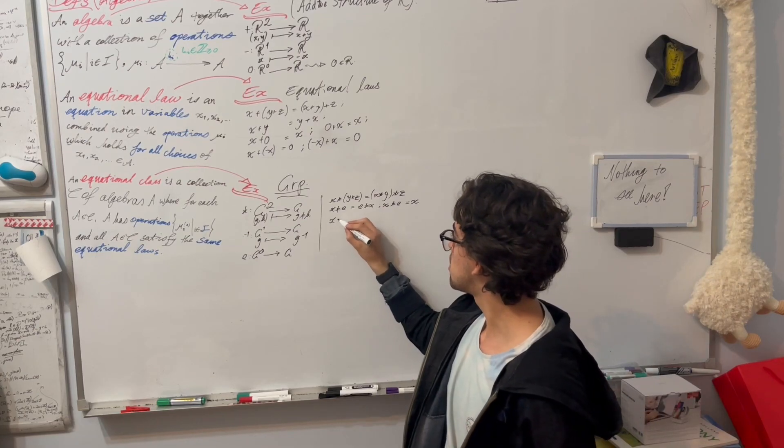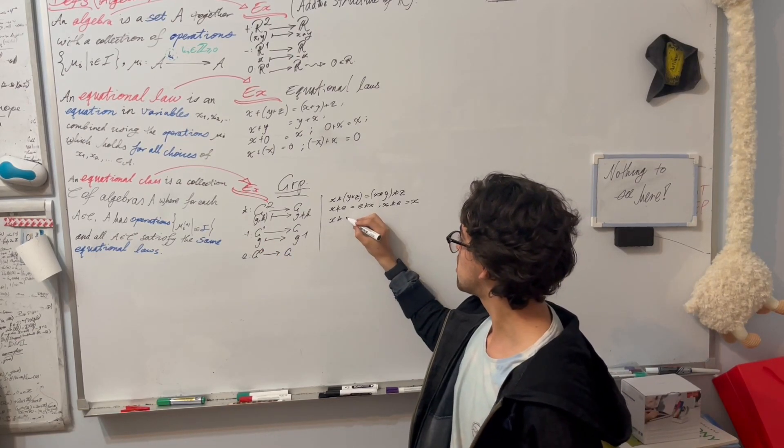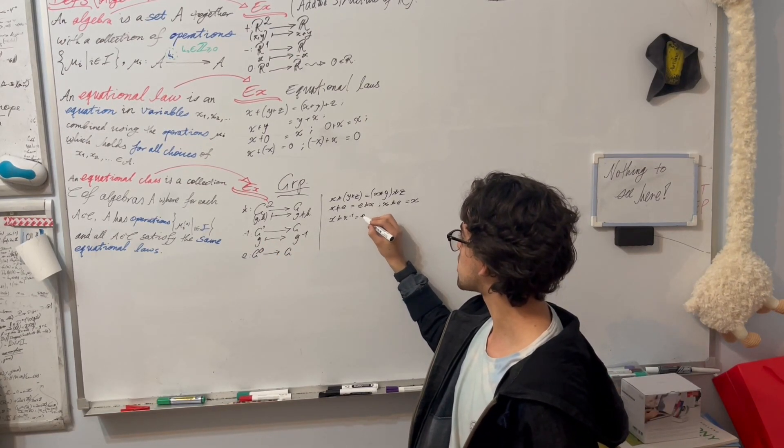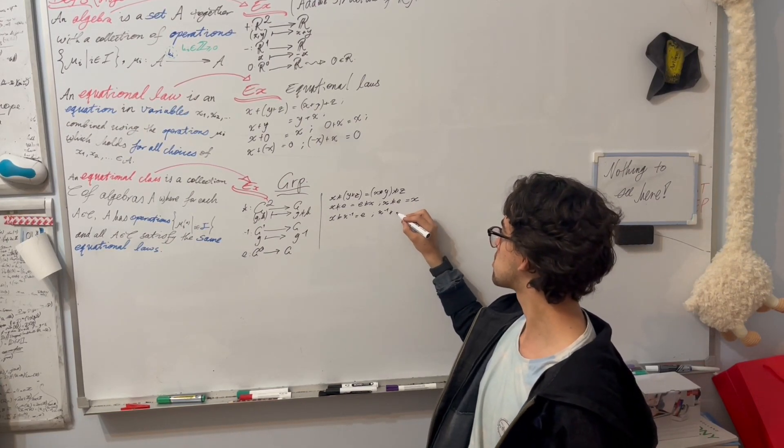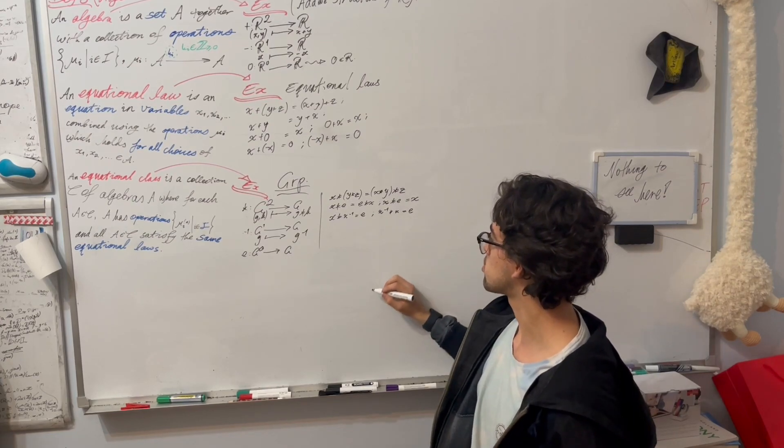And we also have that inversion acts to undo the action of an element. So that x star x inverse is e, and x inverse star x is also e.